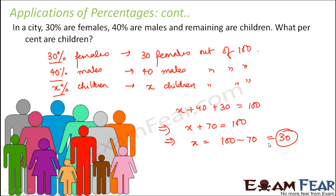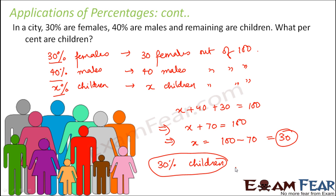Does that mean there are exactly 30 children in the city? No — these are not real counts but percentages. So there are 30% children in that city; the exact number could be anything. If we assume the total is 100 people, then 30 are female, 40 are male, and 30 are children. If there are 1000 people, then females = 30% of 1000 = 300, males = 40% of 1000 = 400, and so on. This is the usefulness of percentage.